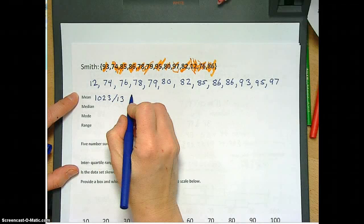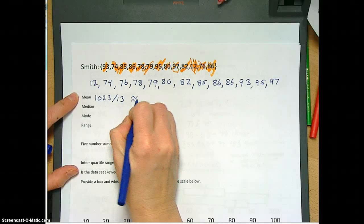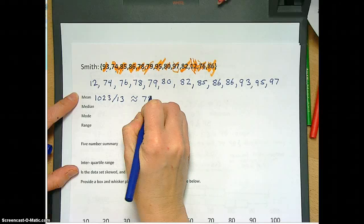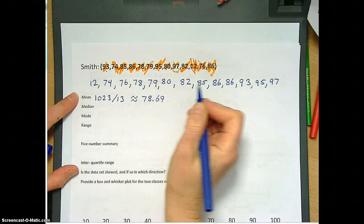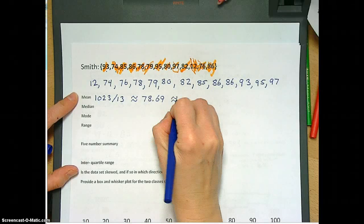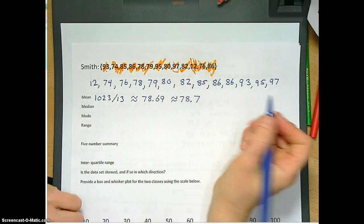So 1,023 divided by 13 is approximately equal to 78.69, or 78.7. It doesn't really matter at this point how you want to say that, or even 79. However you want to round at this point is fine.